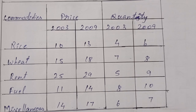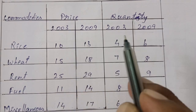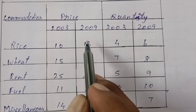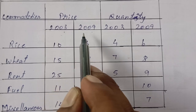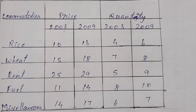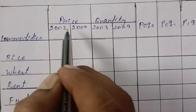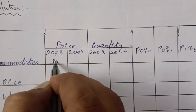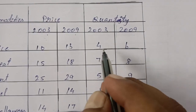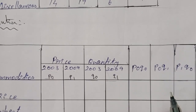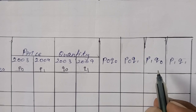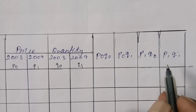We set up the table with columns: P0 and P1 for price (year 2003 and 2009 respectively), and Q0 and Q1 for quantity. Price 2003 is P0, Price 2009 is P1, Quantity 2003 is Q0, Quantity 2009 is Q1. We can now enter the data using the shortcut method.